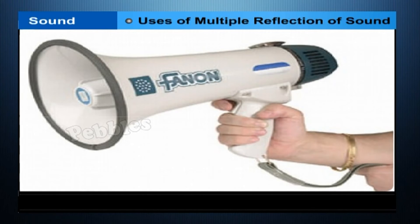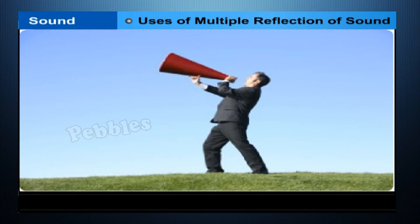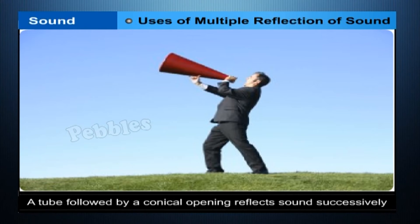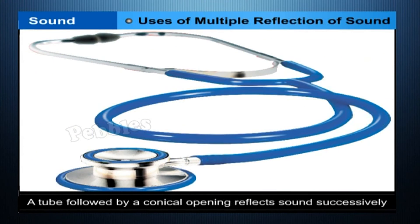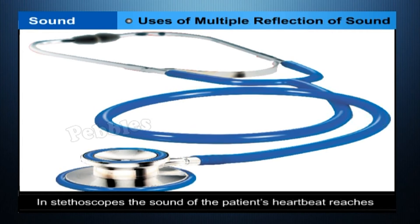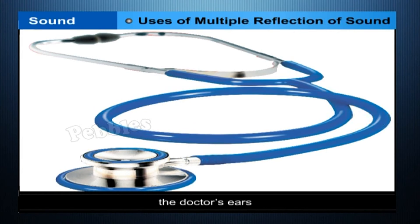Uses of multiple reflection of sound. Megaphones or loud hailers, horns, musical instruments such as trumpets and shahnais are all designed to send sound in a particular direction without spreading it in all directions. In these instruments, a tube followed by a conical opening reflects sound successively to guide most of the sound waves from the source in the forward direction towards the audience. Stethoscope is a medical instrument used for listening to sounds produced within the body, chiefly in the heart or lungs. In stethoscopes, the sound of the patient's heartbeat reaches the doctor's ears by multiple reflection of sound.